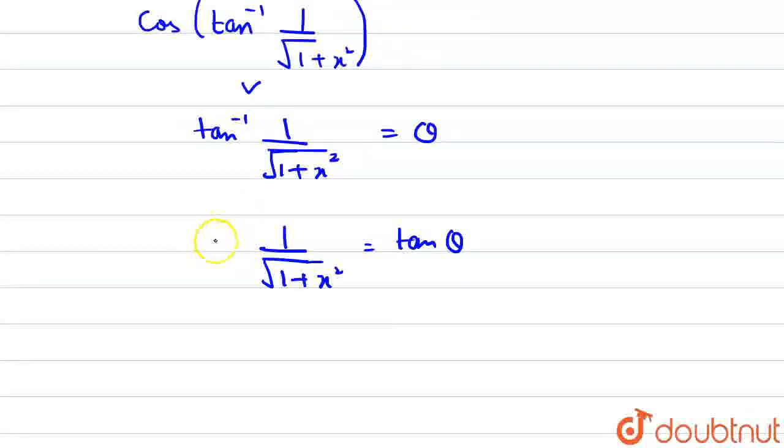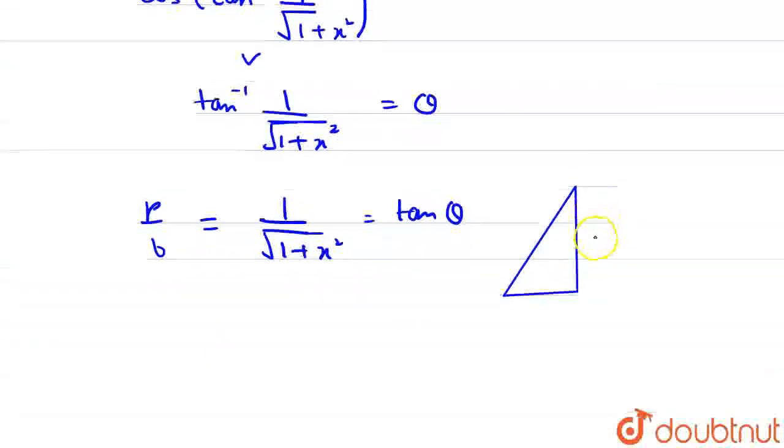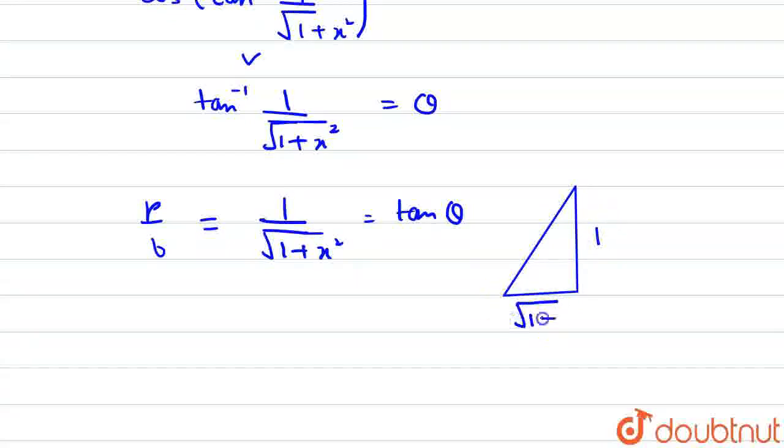Now, again using triangle rule, tan theta is equal to perpendicular upon base. We will again draw a triangle. Perpendicular is 1. Base is root of 1 plus x squared.